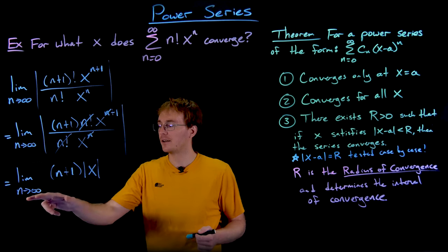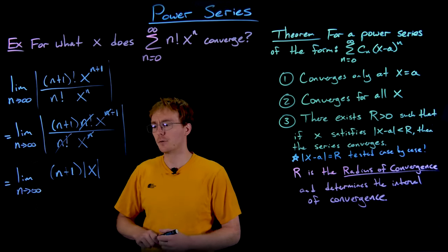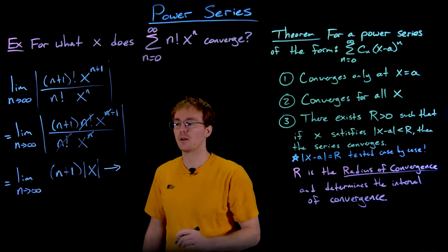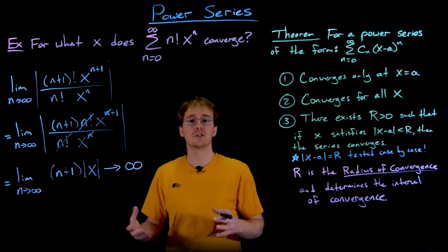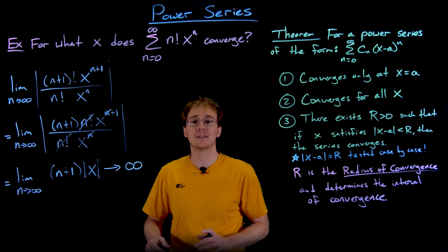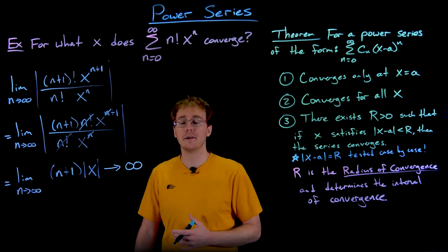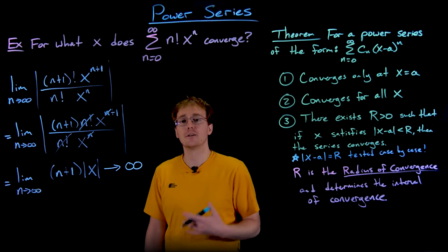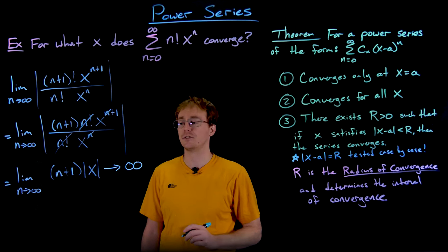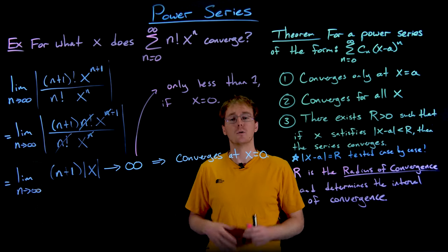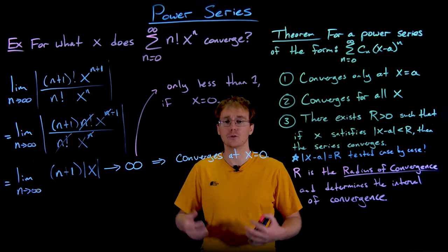We're taking the limit as n approaches infinity, not x, so we can treat x as a constant. No matter what x is, the quantity (n+1) itself goes to infinity. For convergence via the ratio test, the limit must be less than 1 — but that's impossible here. This ratio will never be less than 1, so the series never converges except when x equals 0, making this power series not very useful.